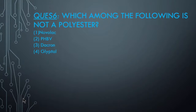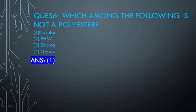Question 6: Which among the following is not a polyester? Again simple - if you keep the points in mind about what polyester is and what compounds are under it, you can answer this. The answer is Novolac - Novolac is not a polyester. Novolac forms under Bakelite, meaning Novolac is part of the formation of Bakelite, and Bakelite is not a polyester - it is a separate classification.